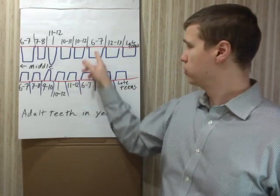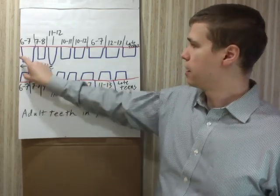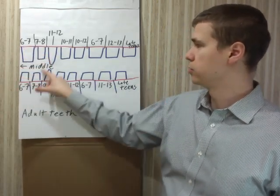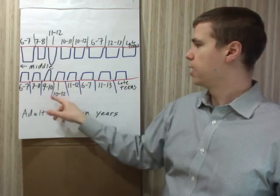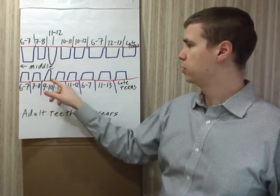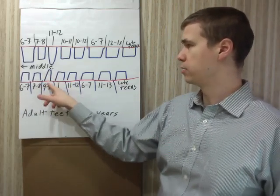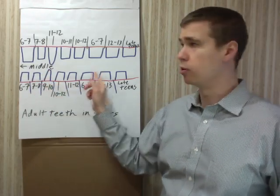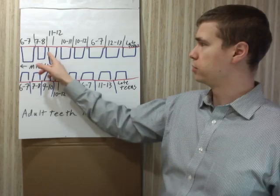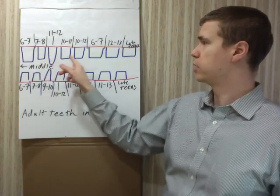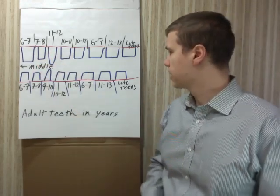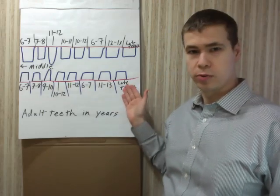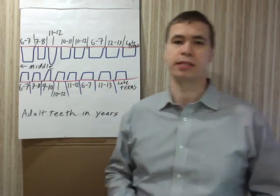So as you can see, the six-year molars are the first teeth, and then the central incisors to the lateral incisors, and then the mandibular canine tends to come in in that order, that middle to outside order, but the maxillary eye tooth, the maxillary canine, tends to come in a little bit later, and all the way out to the third molars, which come in mid to late teens.